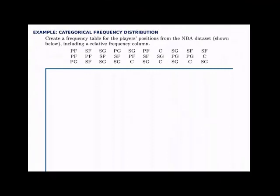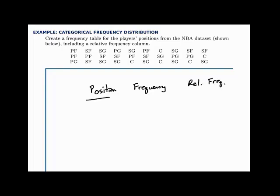In this example, we'll build a frequency table for categorical data. We're given a sample of NBA players with their position — a categorical variable that divides them into point guards, shooting guards, small forwards, power forwards, and centers. We'll build a frequency table with two columns: one for position and one for frequency. We'll also add a third column for relative frequency, which is a good thing to include.